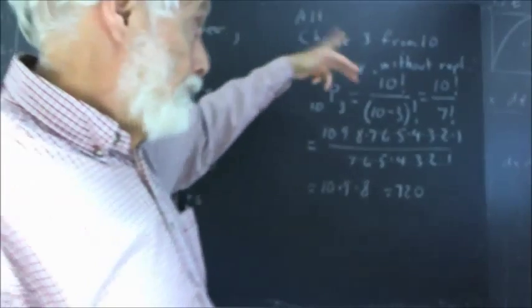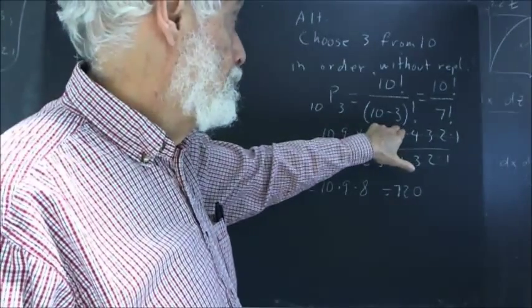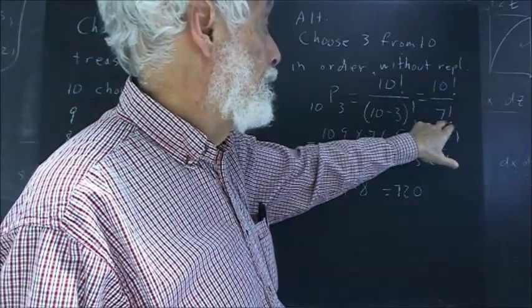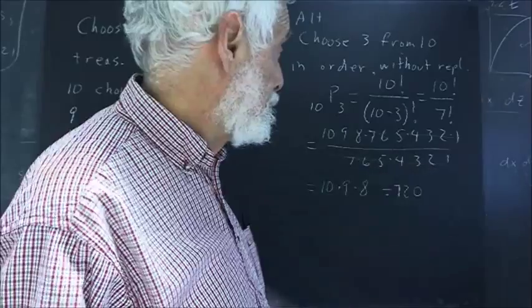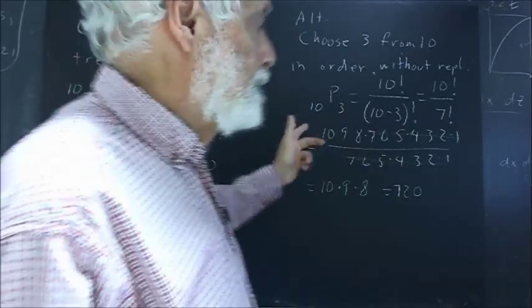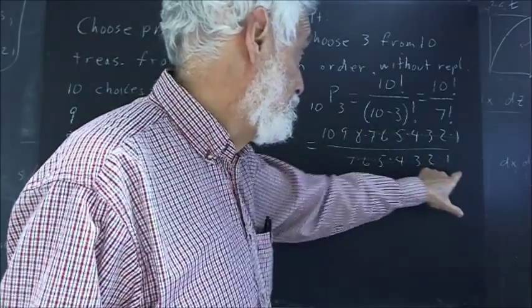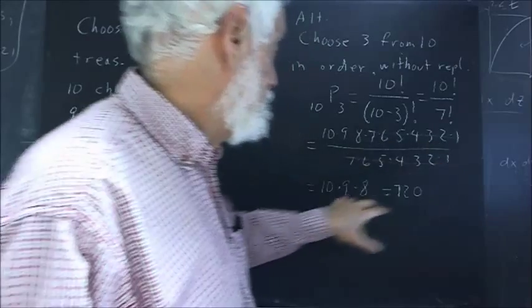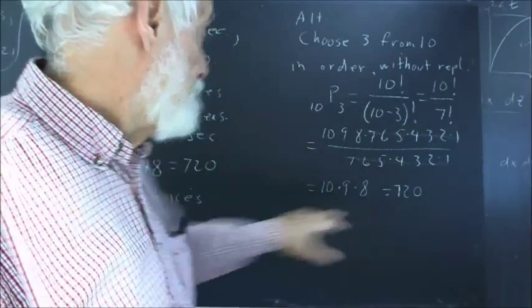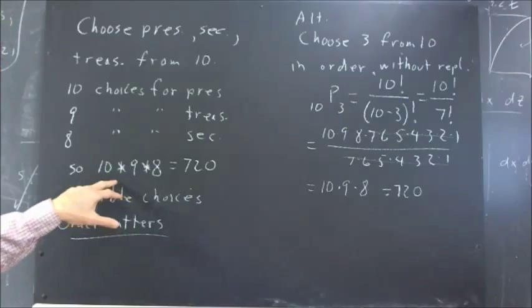And by the formula, that's 10 factorial divided by 10 minus 3 factorial, which is 10 factorial divided by 7 factorial. And as we've seen, you're going to divide out everything from 7 down to 1. And you're going to end up with 10 times 9 times 8, the same expression we got directly from the